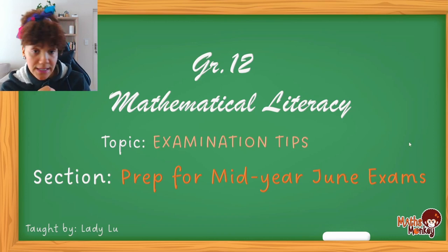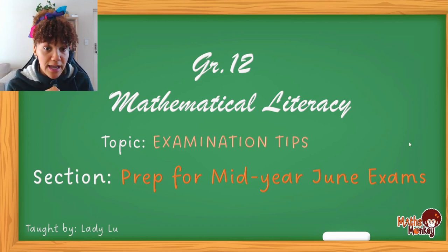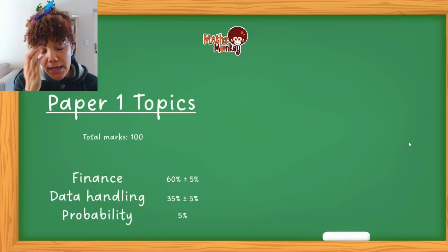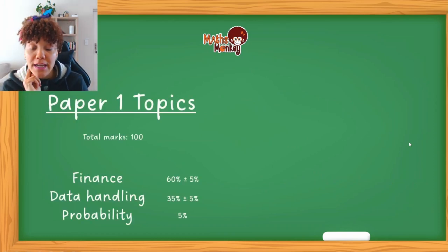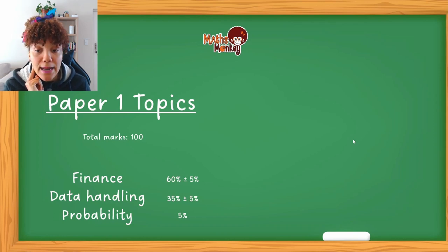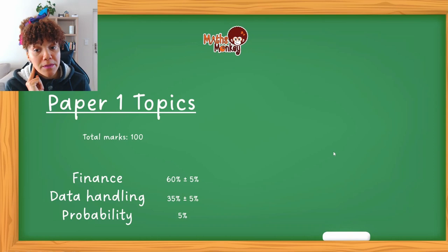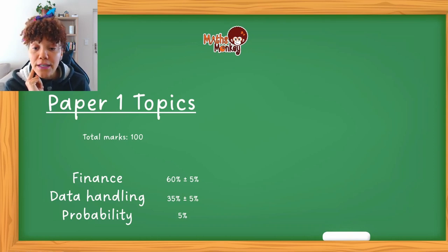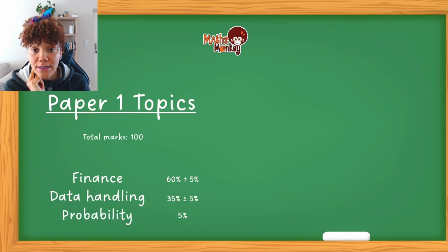This is exam tips for the June exams. Let's first have a look at what you can expect from the papers. In Paper One, the topics covered are finance, data handling, and probability. For June, this question paper is going to be out of 100. At the end of the year, the papers are out of 150, but because this is the mid-year and you haven't covered all the content yet, it is only 100 marks.